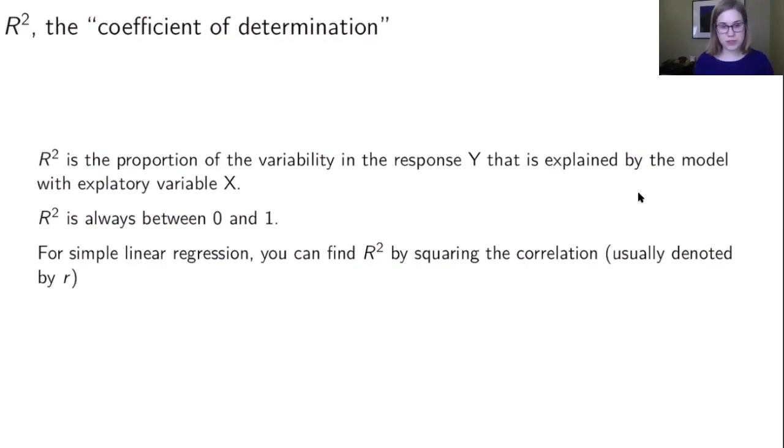It's always between zero and one, and bigger values mean more of the variability is explained. So that's usually a better thing. You want a larger R squared value.